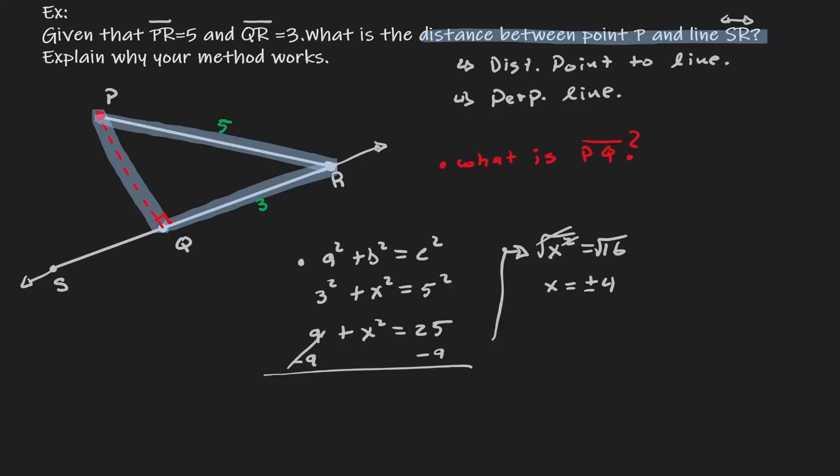So which one do we take in consideration? Do we take positive 4 or do we take negative 4? Well, it is a distance. There is no such thing as a negative distance. So that's the reason as to why we're only going to take in consideration positive 4. So what we can say here now, since PQ is equals to 4, then the distance from P to SR is equal to 4.